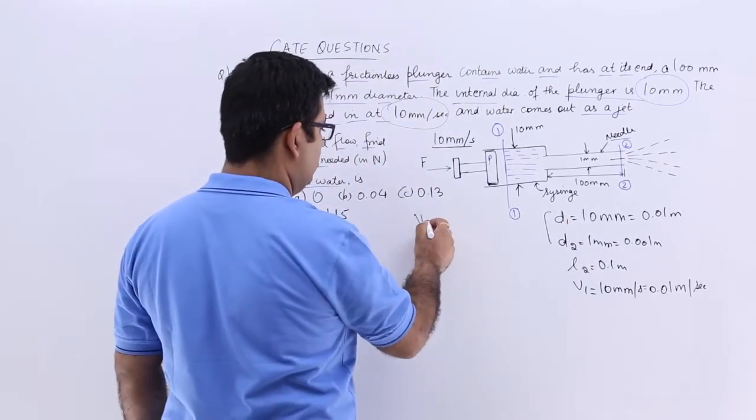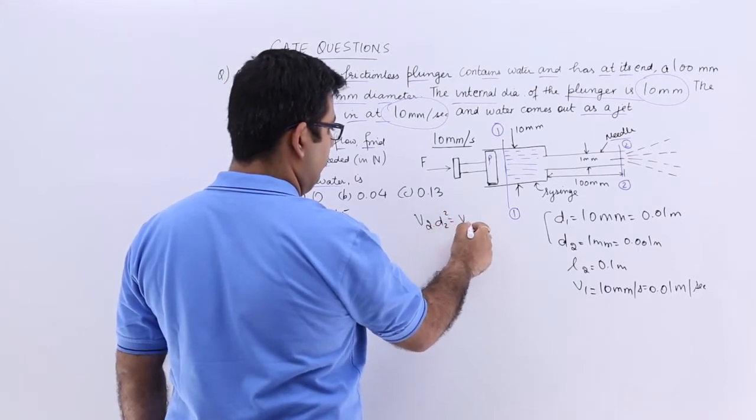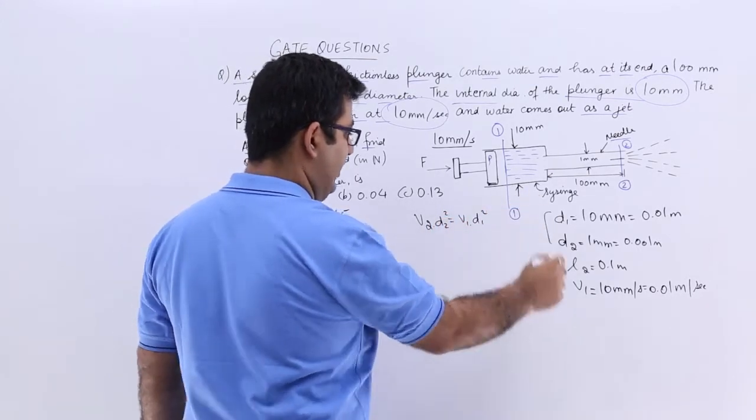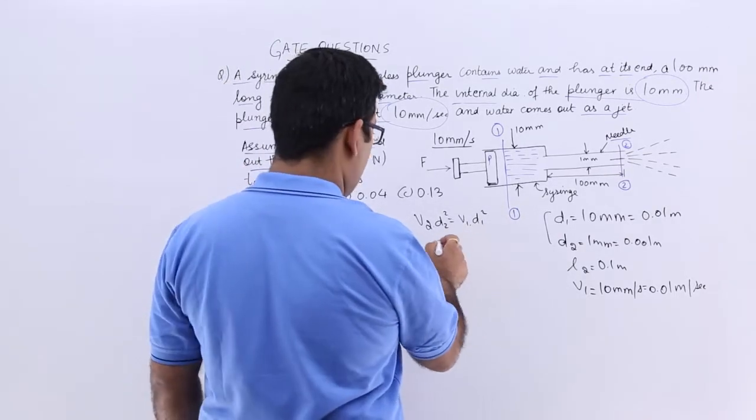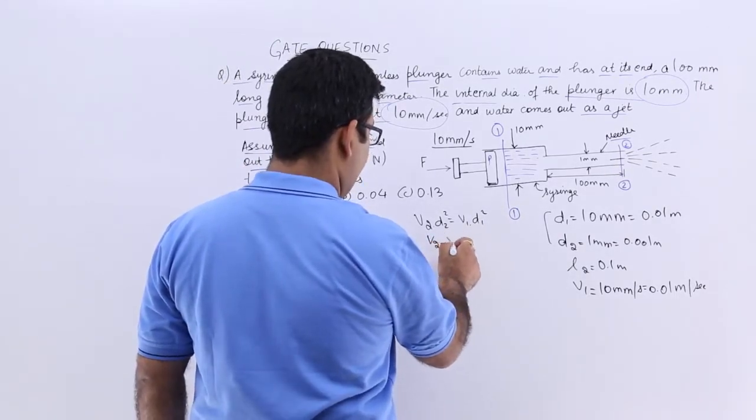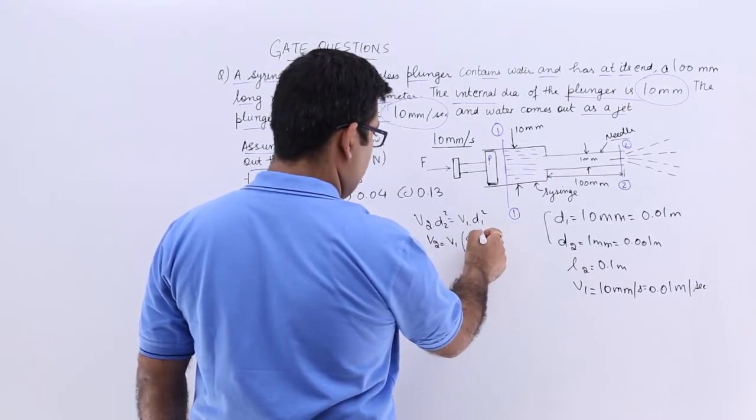So V2 into D2 square is equal to V1 into D1 square. So your pi by 4 can be cancelled out. So your V2 would be V1 into D1 by D2 whole square.